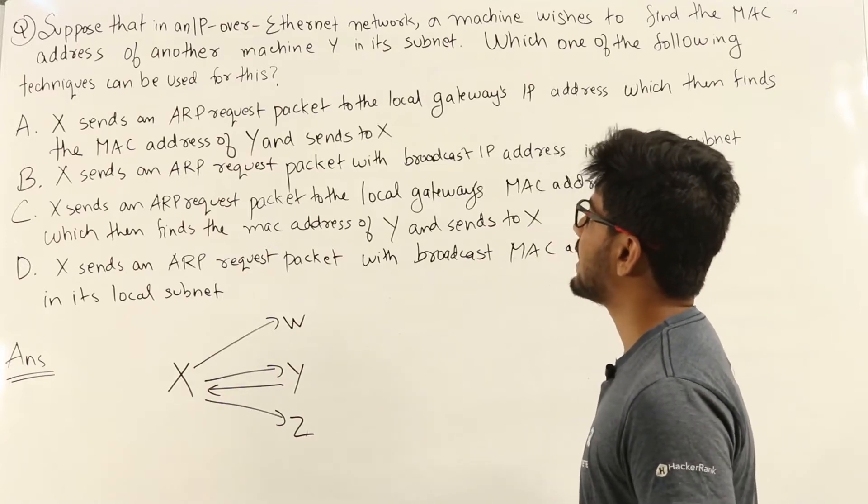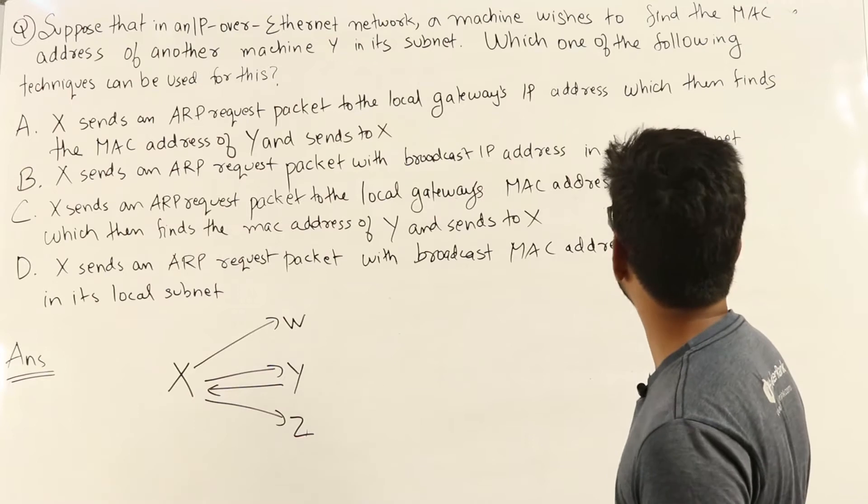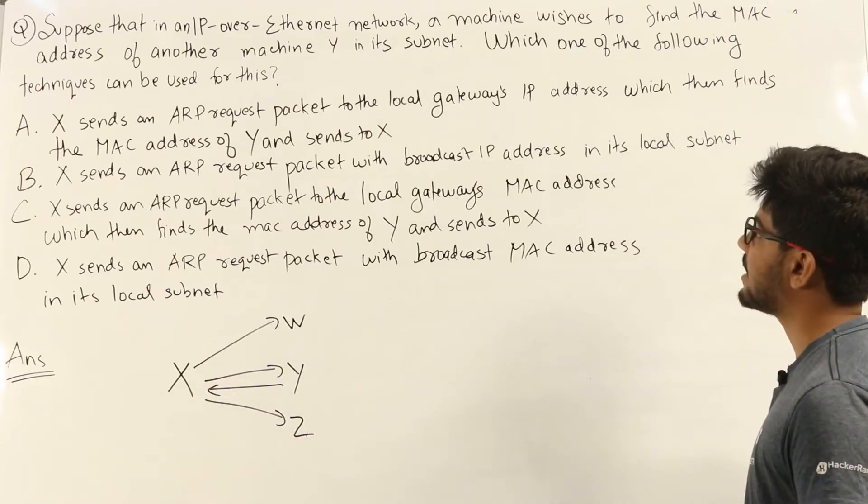A. X sends an ARP request packet to the local gateway's IP address which then finds the MAC address of Y and sends to X.